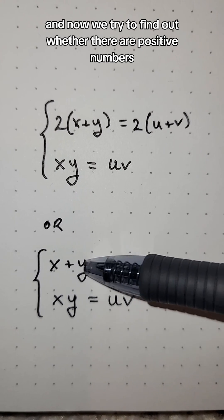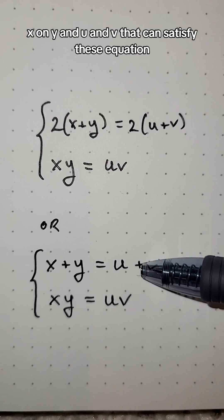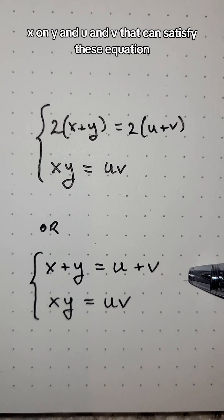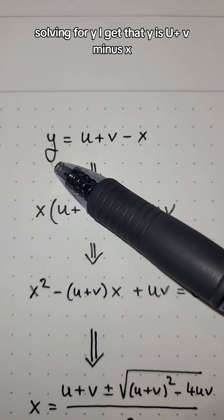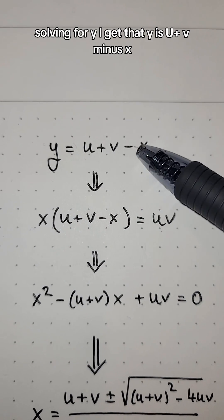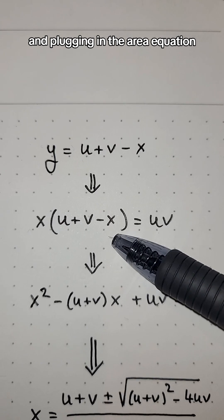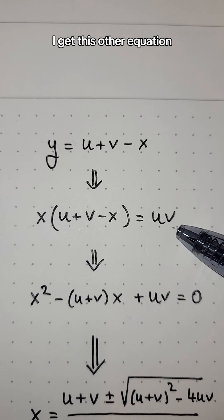And now we try to find out whether there are positive numbers, x and y and u and v, that can satisfy this equation. Solving for y, I get that y is u plus v minus x, and plugging in the area equation, I get this other equation.